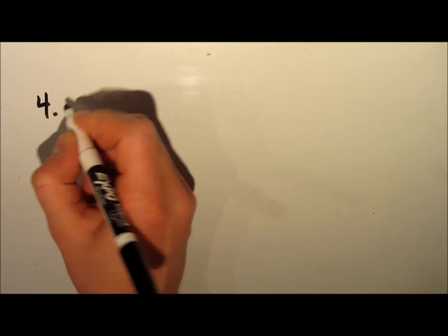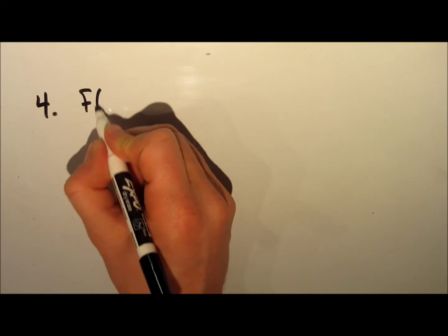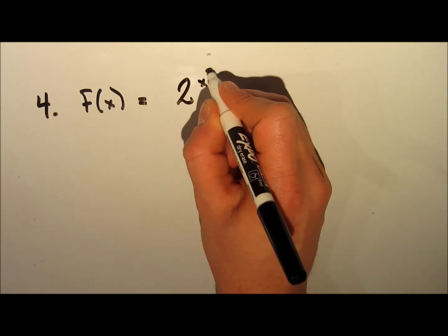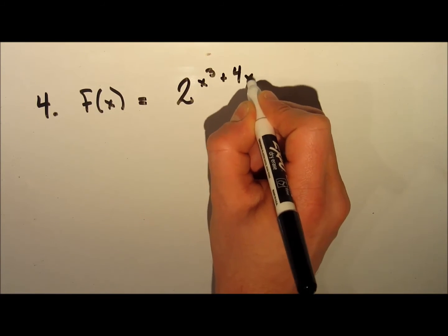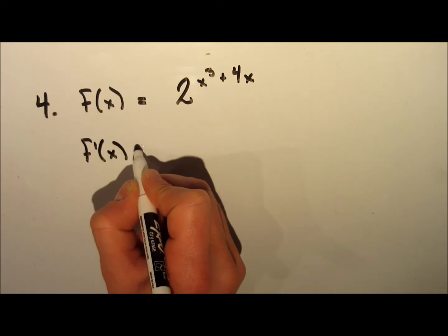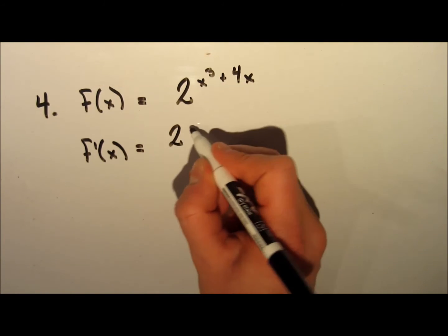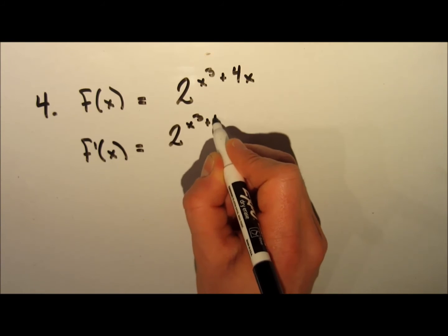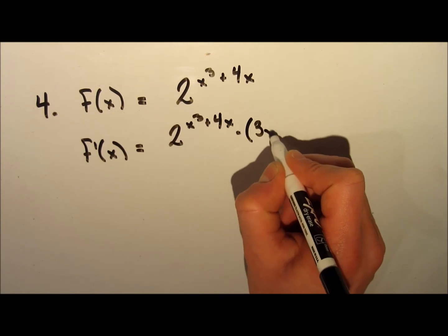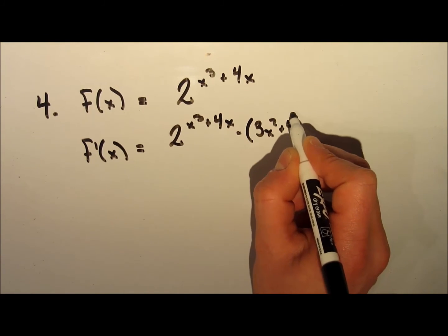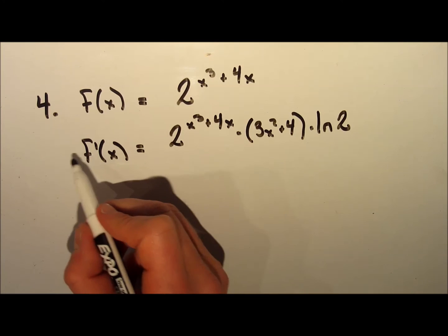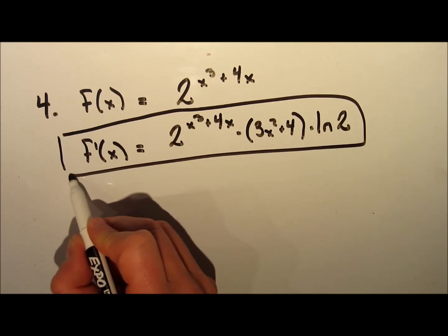In this last example, I'll show you the fourth pattern. The function is f(x) = 2^(x³ + 4x). We can think of x³ + 4x as our g(x) part. Following the pattern, we rewrite the whole function — 2^(x³ + 4x) — then multiply by the derivative of that exponent, which is 3x² + 4, and then multiply by ln(2). We just follow the pattern and that's how we get the answer.